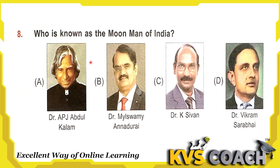Next question: who is known as the Moon Man of India? Option A is Dr. APJ Abdul Kalam — he is known as the Missile Man of India. Option B is Dr. Mylswamy Annadurai — yes, he is the Moon Man of India. Option C is Dr. K. Sivan — he is known as the Rocket Man of India. Option D is Dr. Vikram Sarabhai — he is the father of the Indian Space Program. So the right answer is option B.